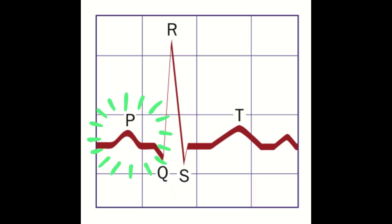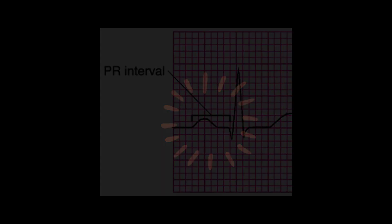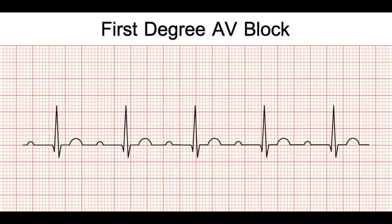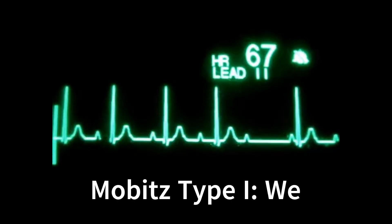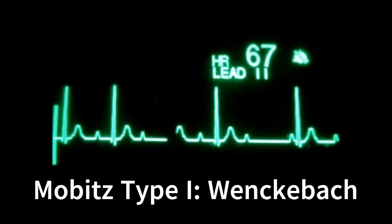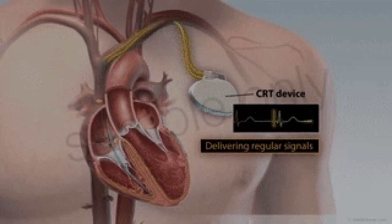Identifying and measuring the PR interval is a critical step in diagnosing heart conditions. By following these steps, you can accurately measure the PR interval on an EKG strip and better understand your heart's electrical activity.